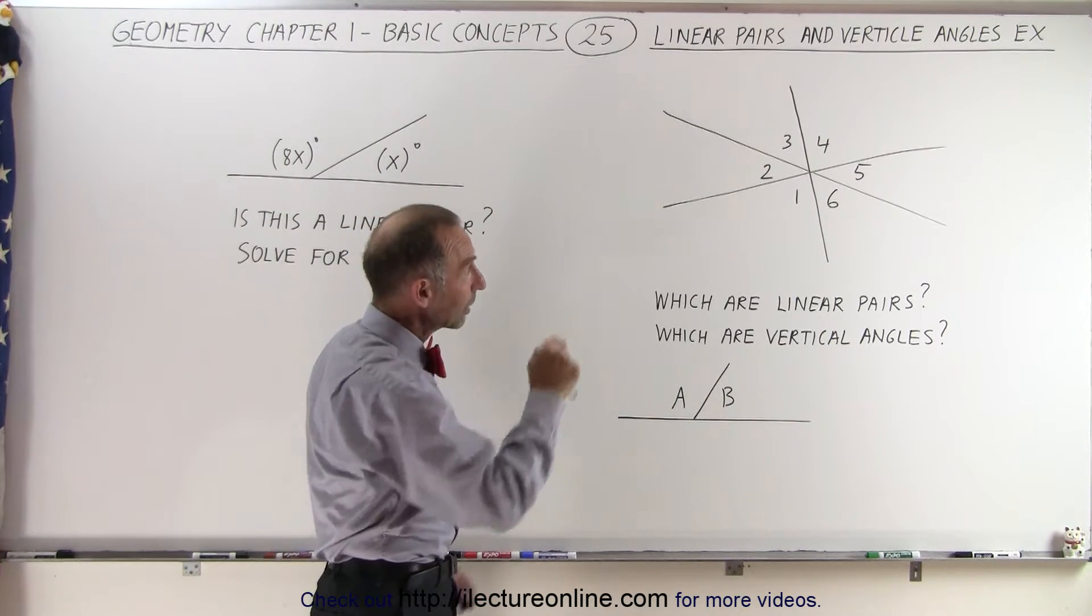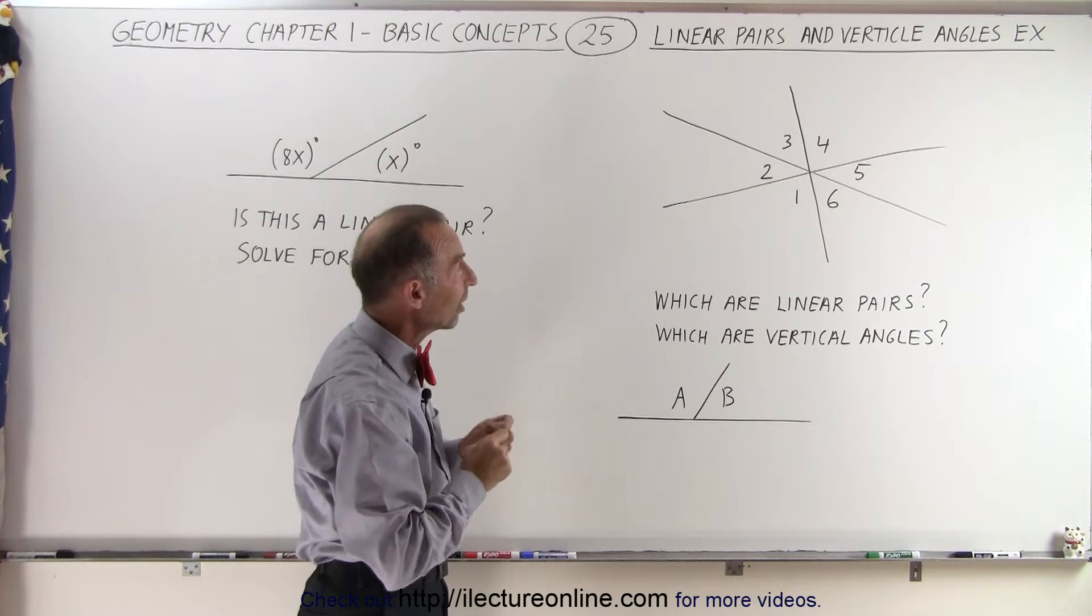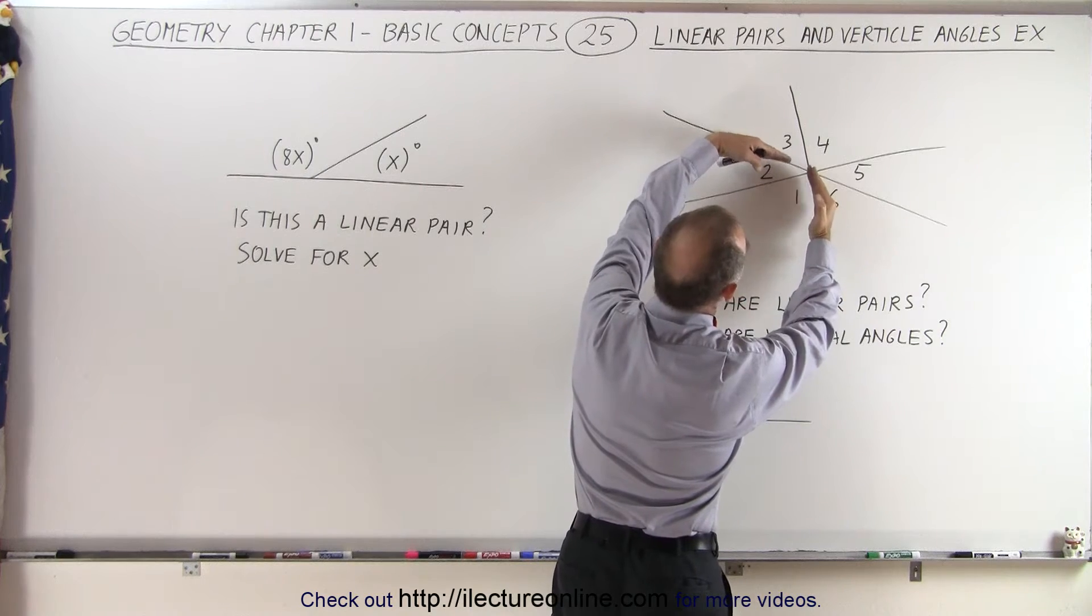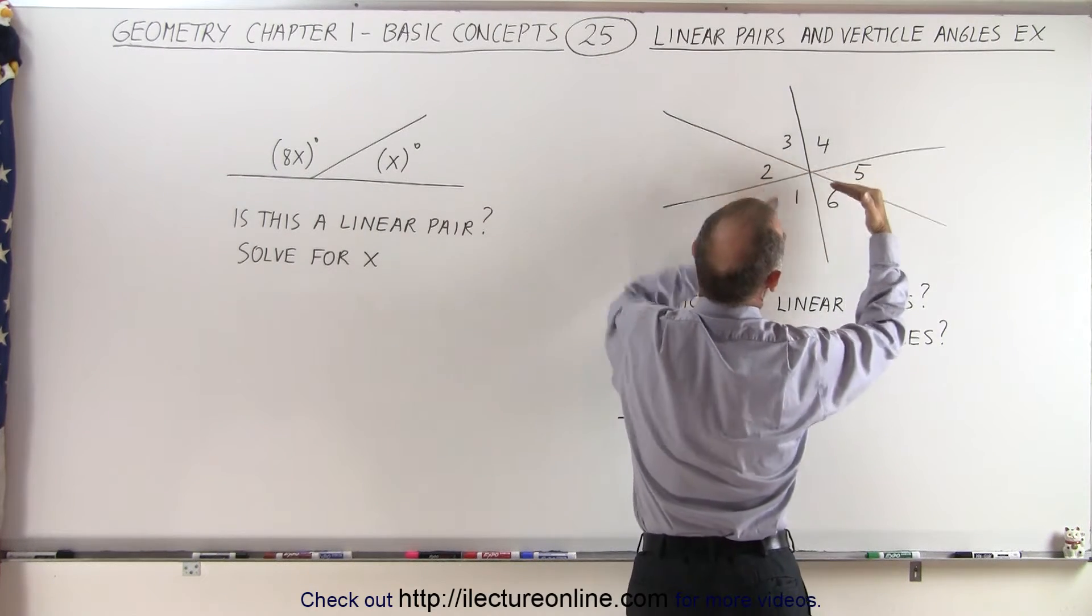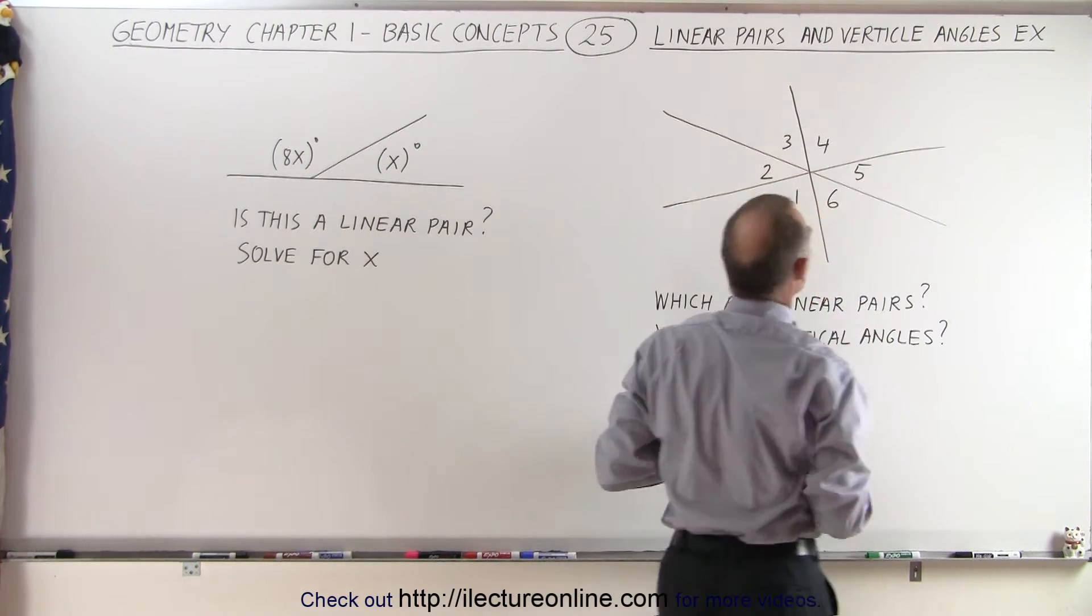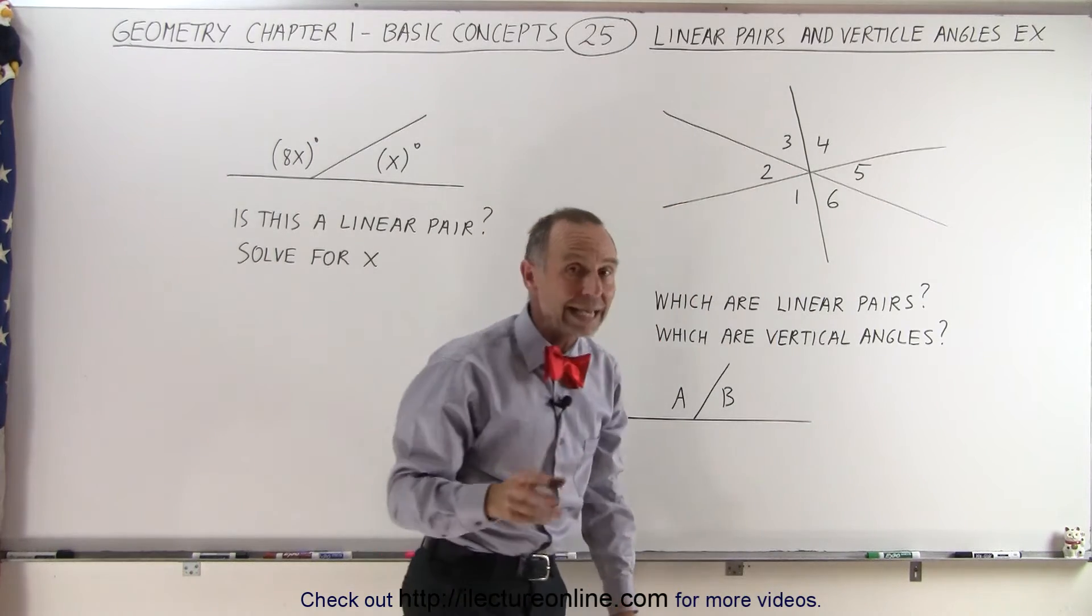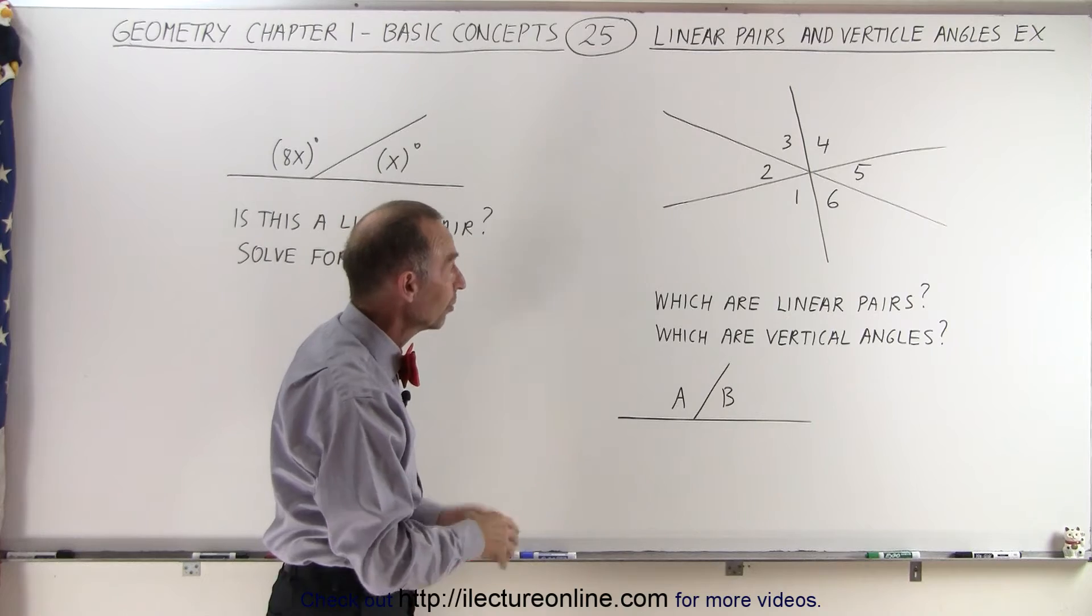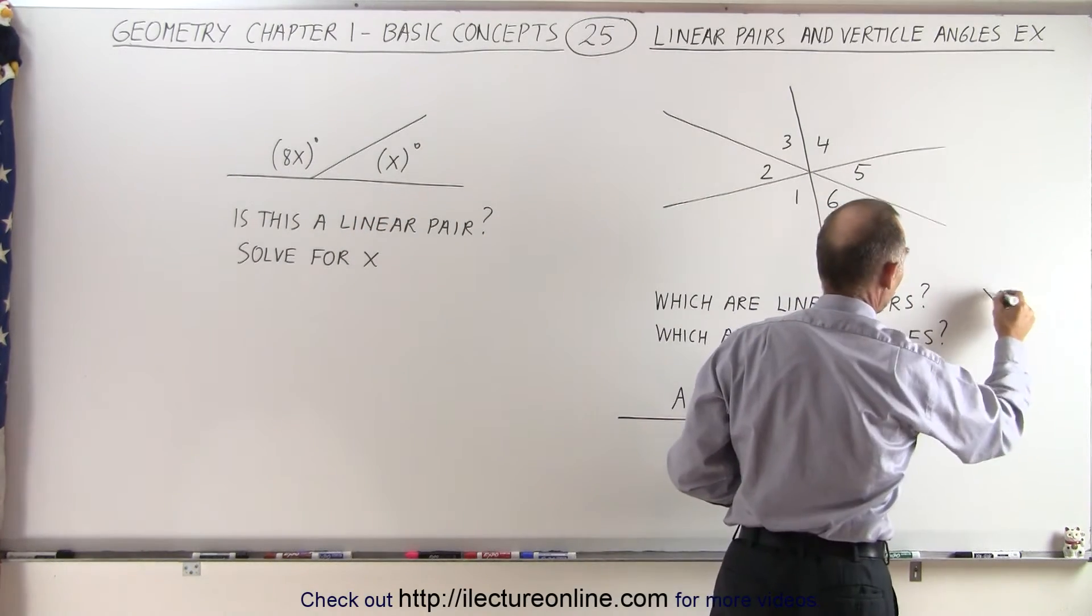But here you take a look at that and look at any two adjacent angles, none of them will add up to 180 degrees. Notice one and two don't add up to 180 degrees, one and six do not, six and five do not. None of these can be taken as a pair of two adjacent angles adding up to 180 degrees, so there are no linear pairs in this example.